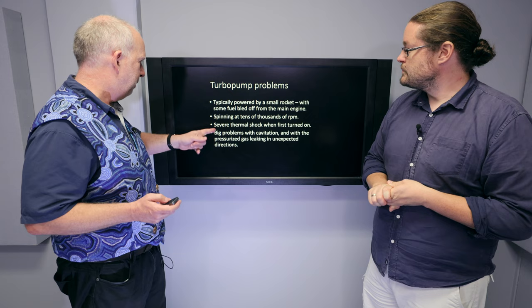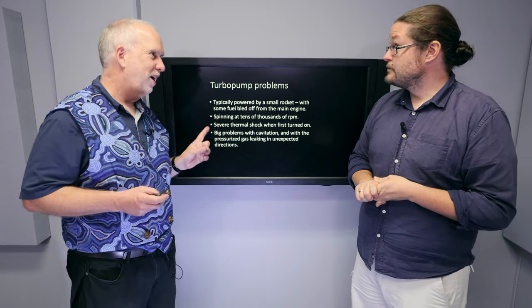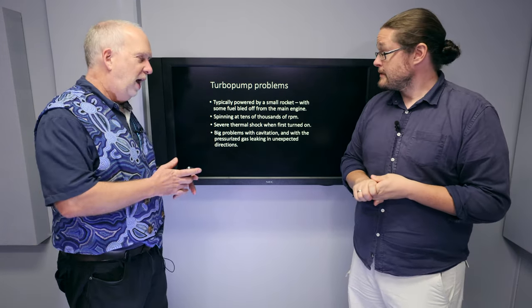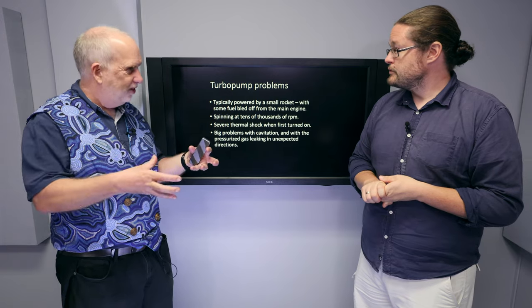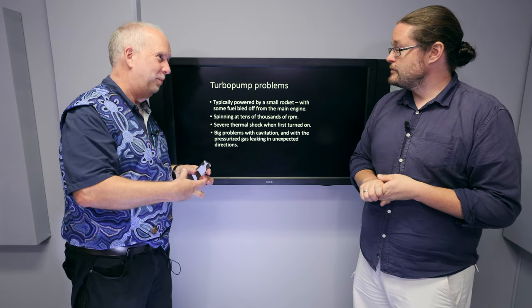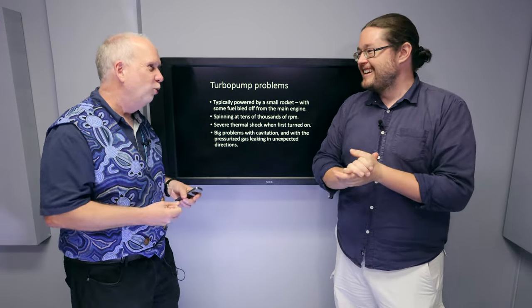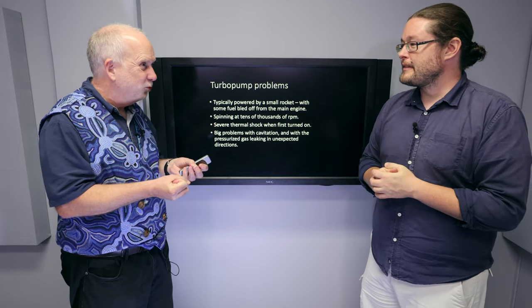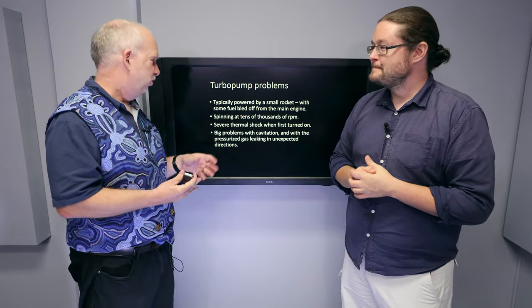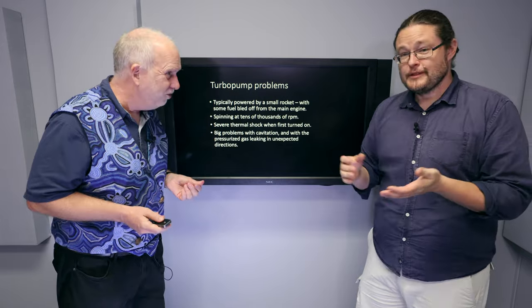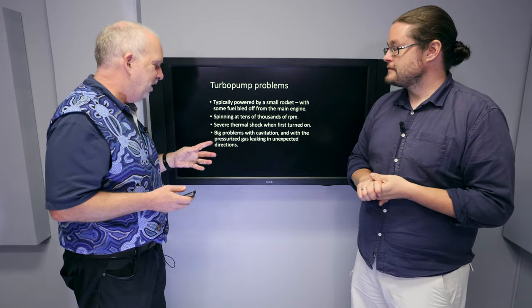So they're powered by the small rocket. They're spinning at tens of thousands of revolutions per minute. And of course, you've got it sitting there, and then suddenly this cryogenic fuel comes in. And as you know, when you suddenly cool things down, everything shrinks, which often causes it to crack. And of course, it might be liquid oxygen, which is highly corrosive. So it's a very difficult thing.